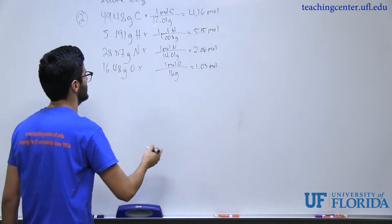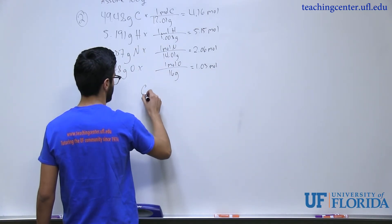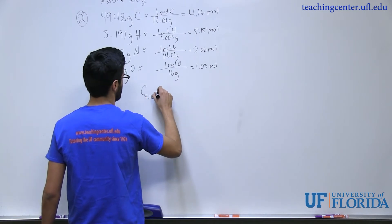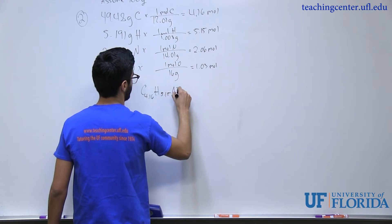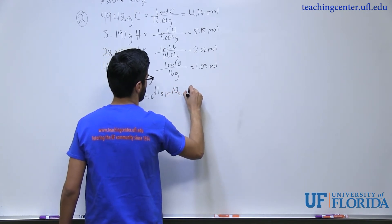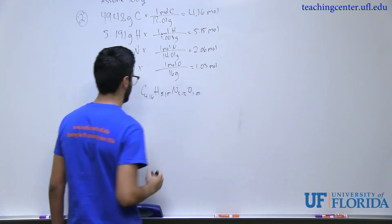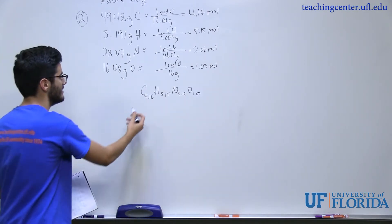For nitrogen you'll get about 2.06 moles and oxygen 1.03 moles. So as it stands right now, you can say you have about carbon 4.16, hydrogen 5.15, nitrogen 2.12, and oxygen 1.03. That's technically what you have—this many moles of each of them.